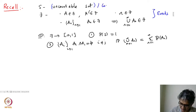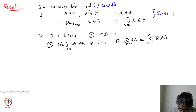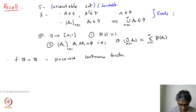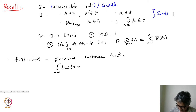And this also worked when S was a countable set. So then we said that we would define probability the following way: we would take f to be a piecewise continuous function from the real line to the real line, non-negative, with the integral of f from minus infinity to infinity equal to 1. Such functions we call probability density functions.